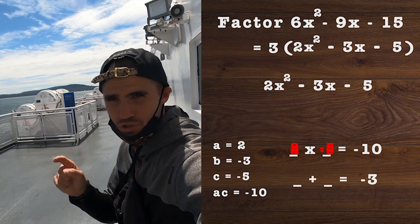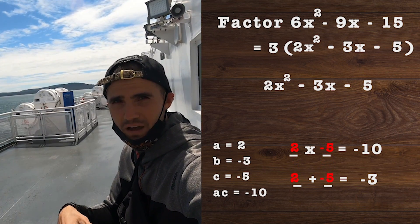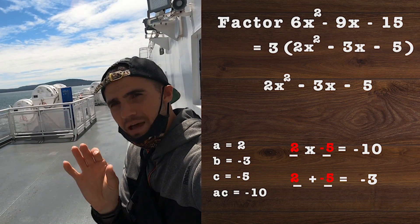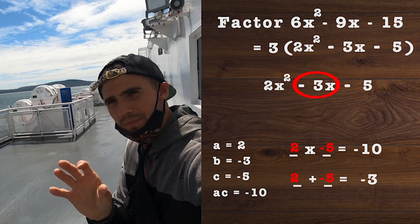The two numbers that would work out would be positive 2 and negative 5. 2 times -5 is -10, and 2 plus -5 is like 2 minus 5, which gives us -3.